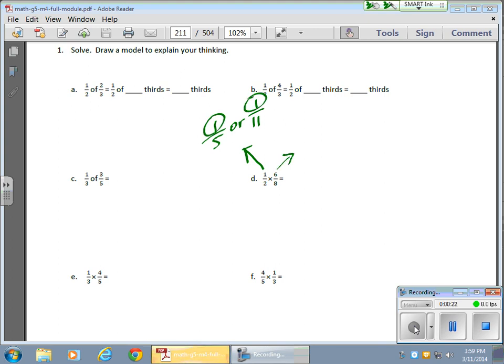Non-unit fractions are basically we have a numerator other than 1, so we could have a 3 fifth or a 4 over 9. Those are all non-unit fractions. So we're multiplying unit fractions by non-unit fractions, and we're going to make models of things as we go.